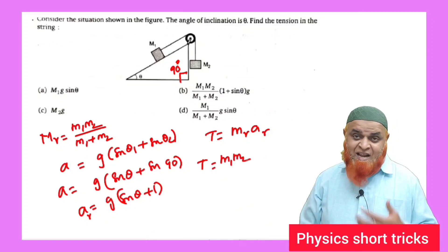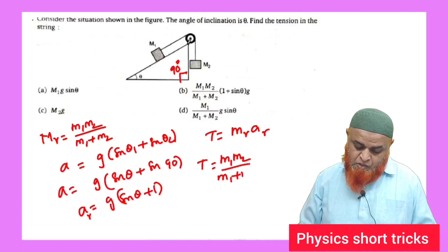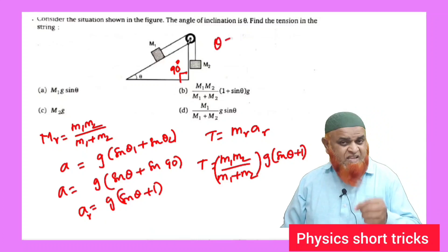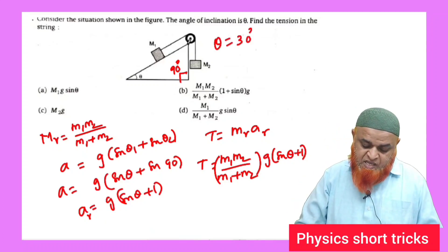Directly you will get the answer. It will be very amazing, really interesting. I am getting laughed at. So I mean m1 m2 by m1 plus m2 times acceleration is nothing but g times sine theta plus 1 here.